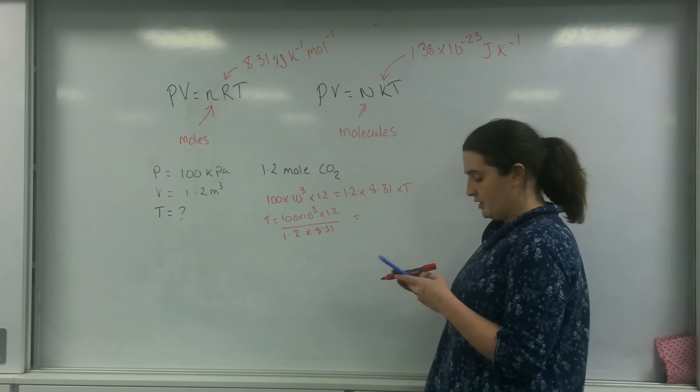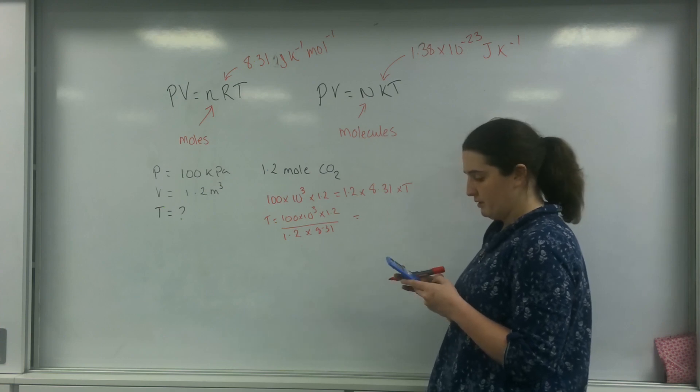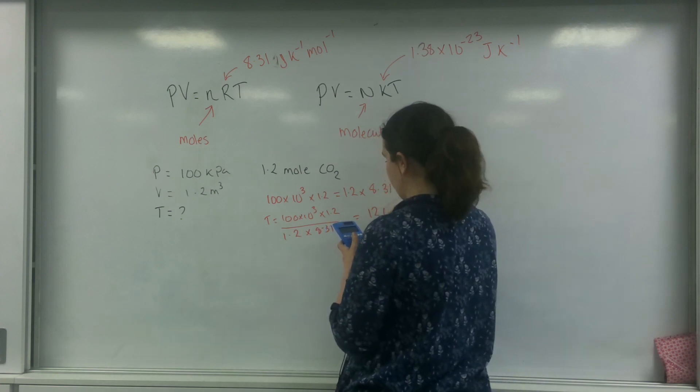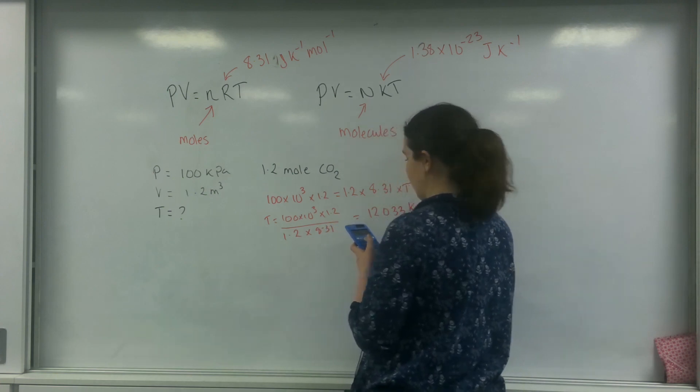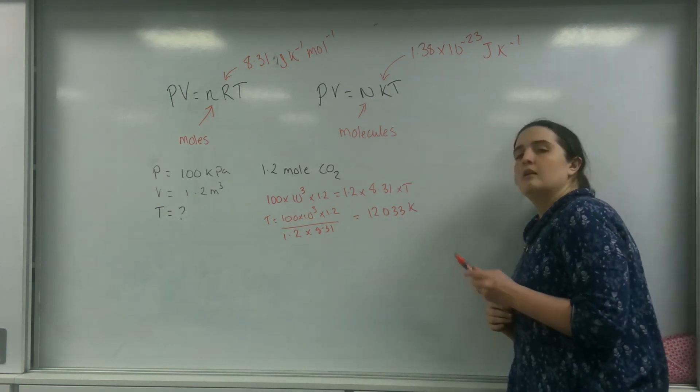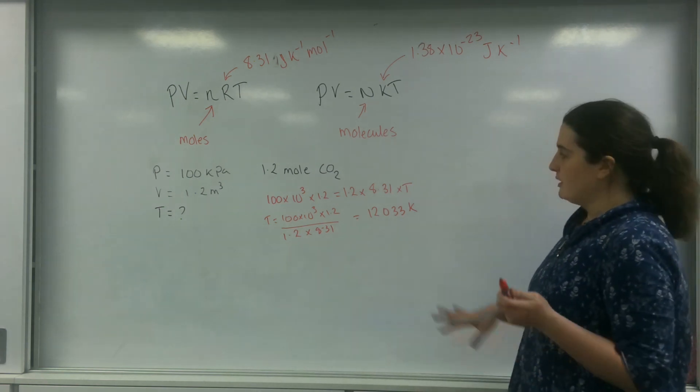So my temperature is going to be 100 times 10 to the 3 times by 1.2 over 1.2 times 8.31. So let's work out my temperature now. So 100 times 10 to the 3 times by 1.2 divided by 1.2 divided by 8.31. My temperature is going to be 12,033 Kelvin.